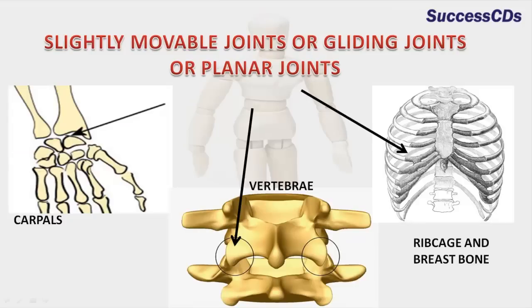Slightly movable joints allow very little movement. You can find these joints in the joints of the carpals, in the joints between adjacent vertebrae in the backbone, and also in the joints between the ribs and the breastbone.